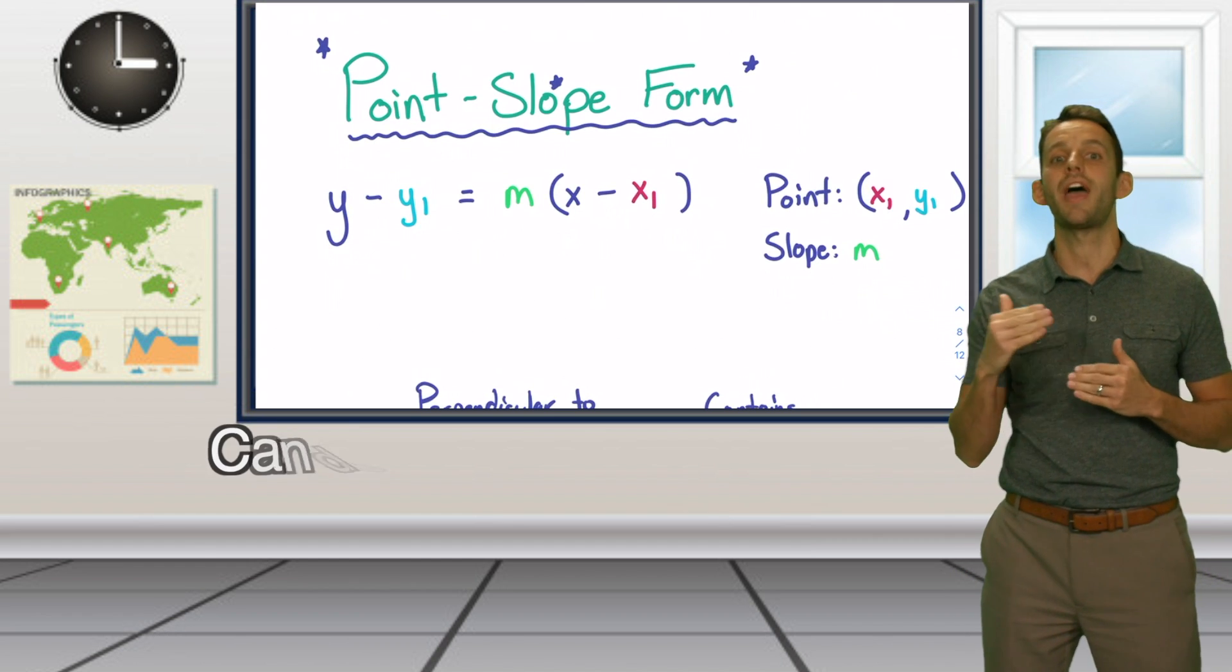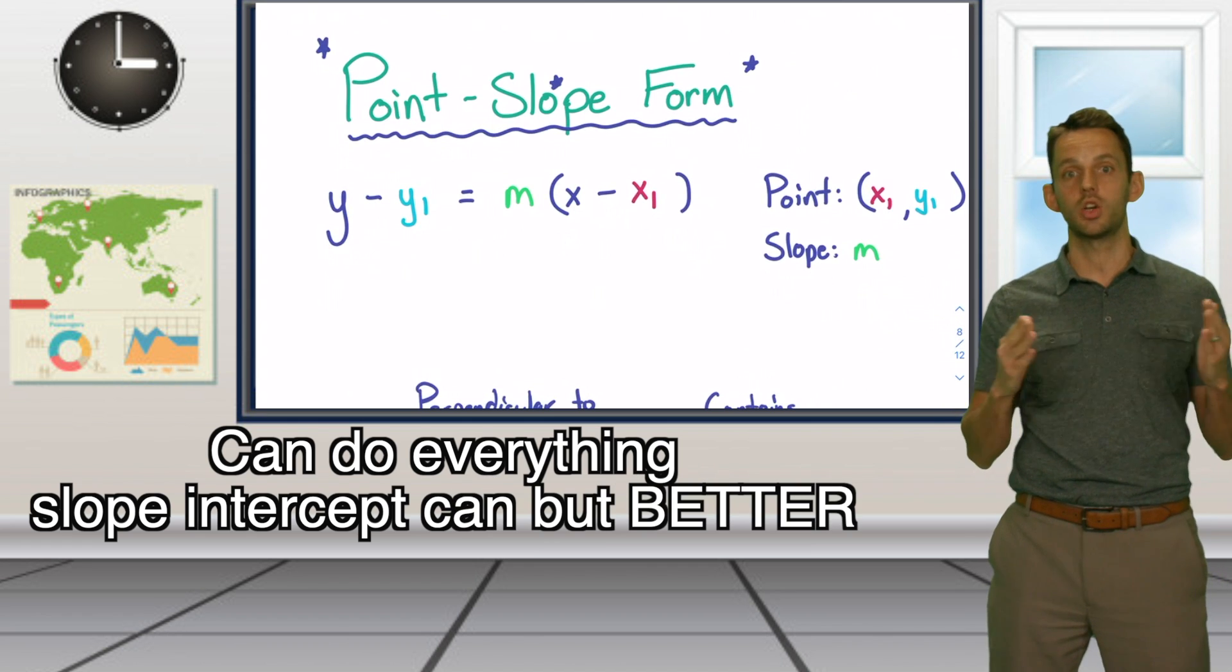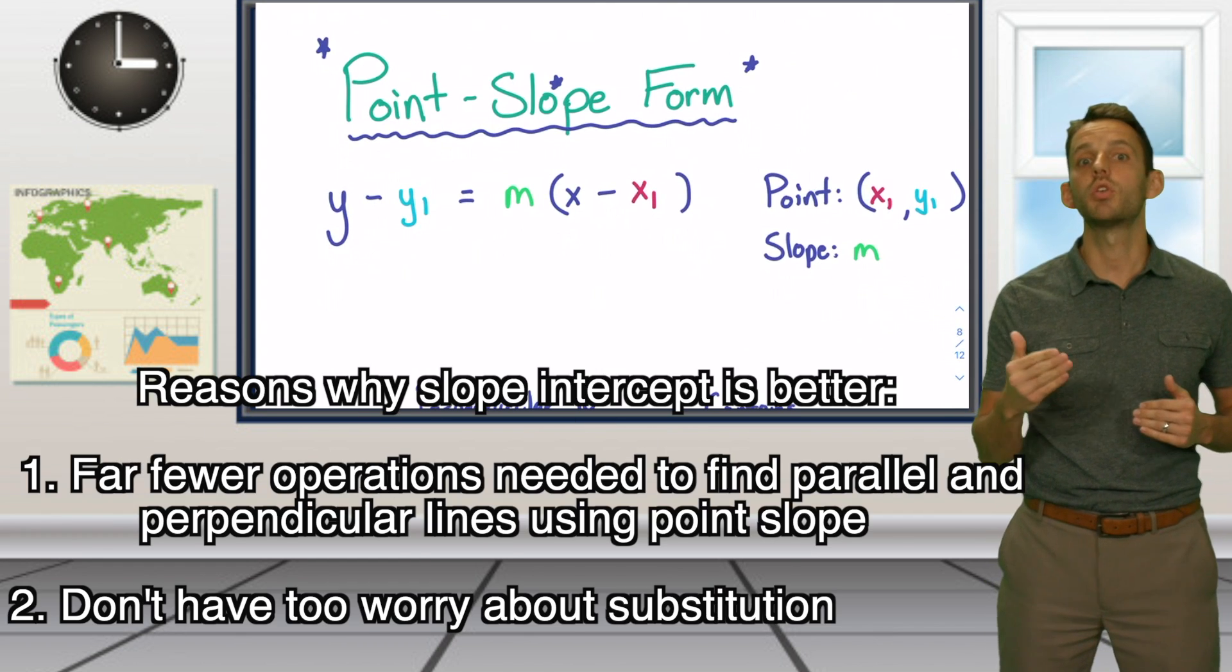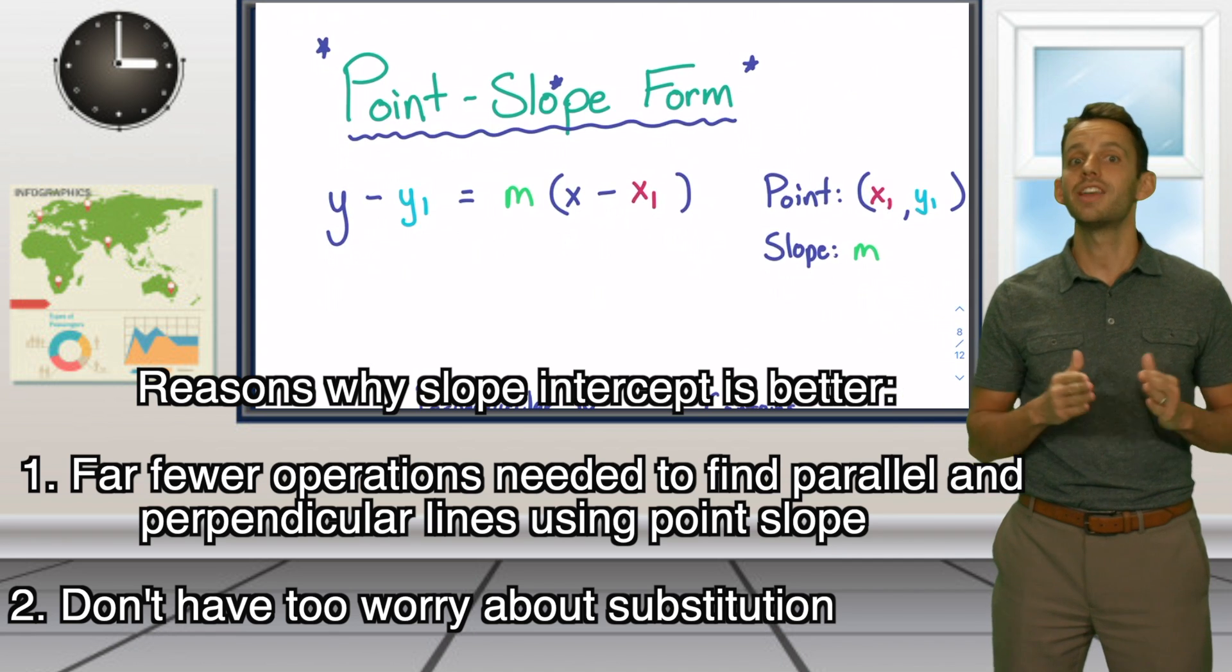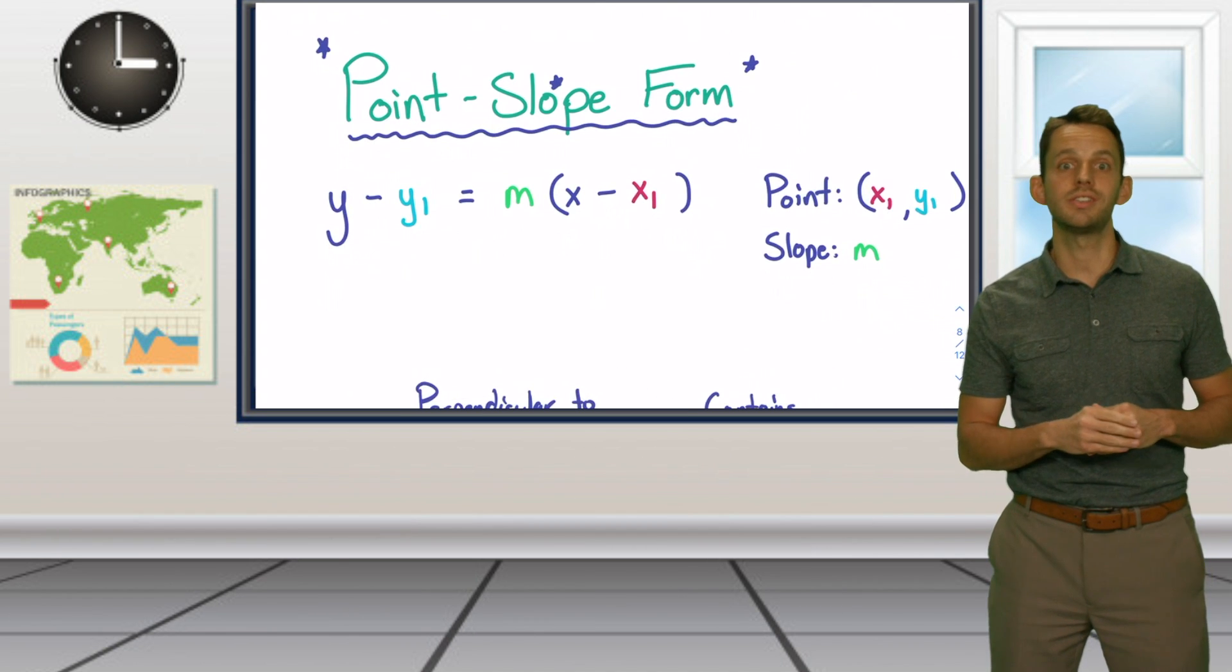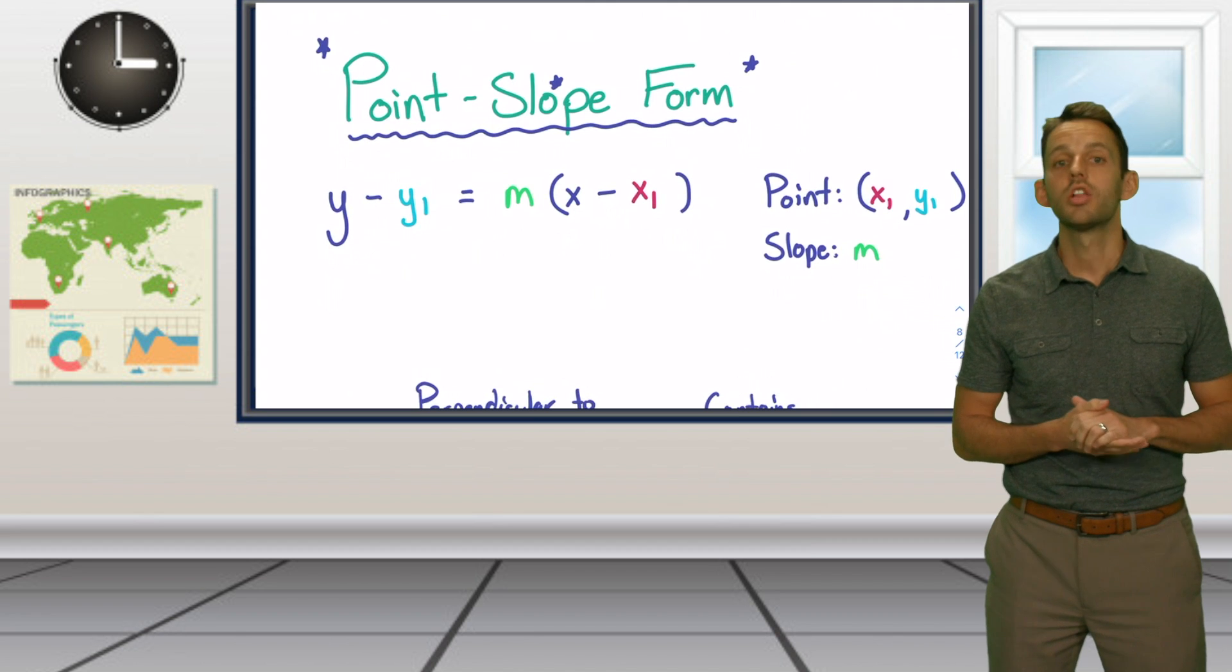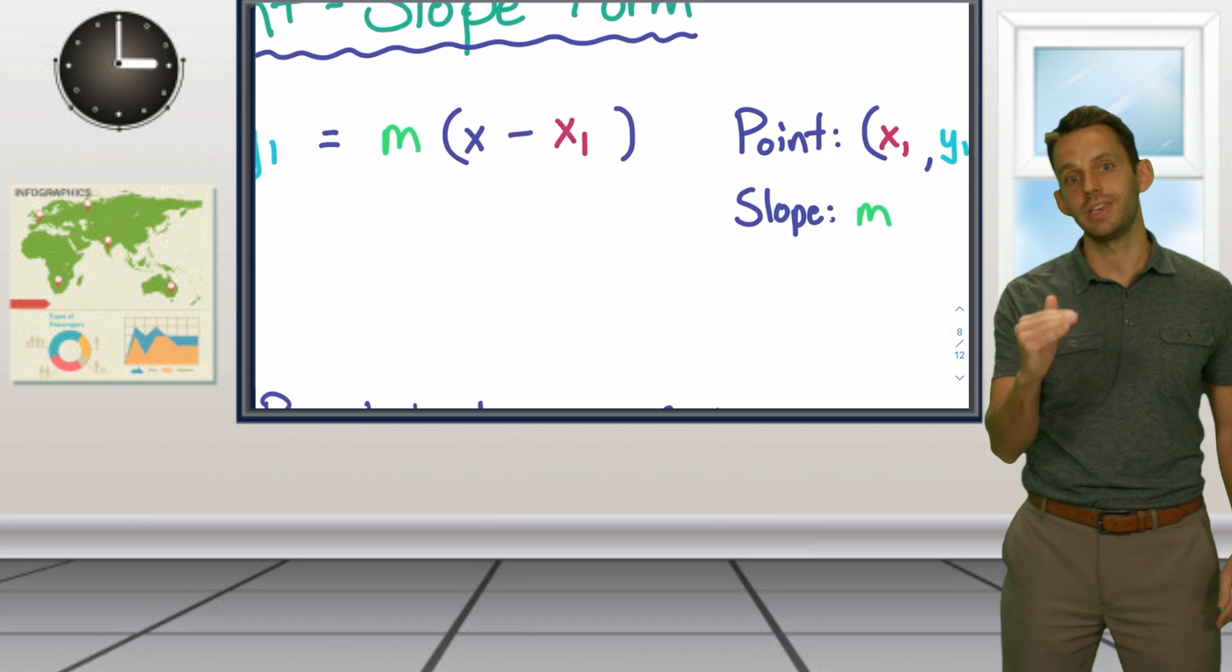Point-slope form can do everything slope-intercept form can, but has the additional advantage of creating an equation from two points much more easily. There are far fewer operations needed to find parallel and perpendicular lines with point-slope form, and you don't have to worry about using substitution. Seeing as graphing linear equations is an important concept in every math subject in high school, learning point-slope form would be wise for any math student looking to make their life easier.